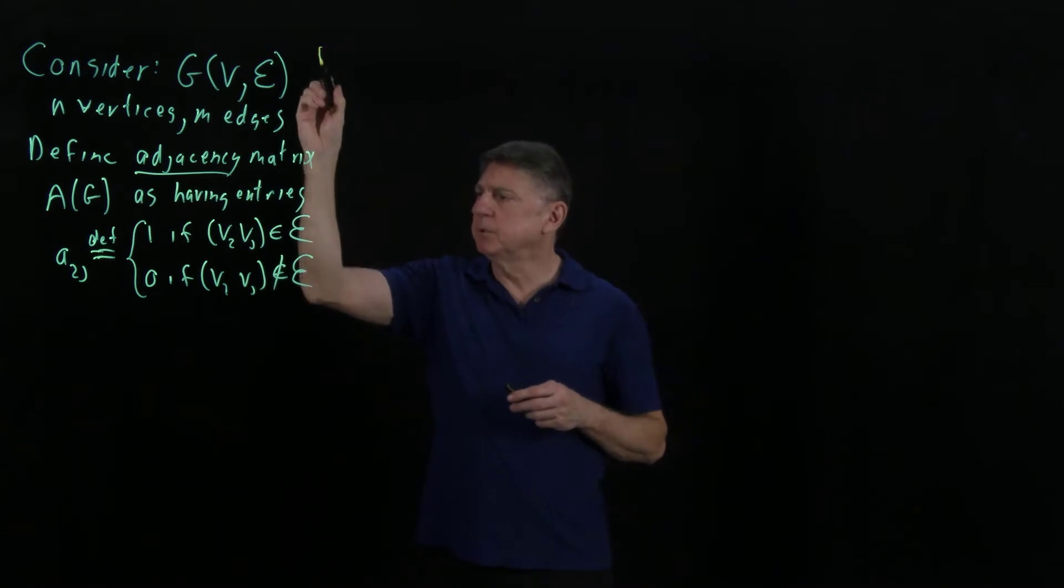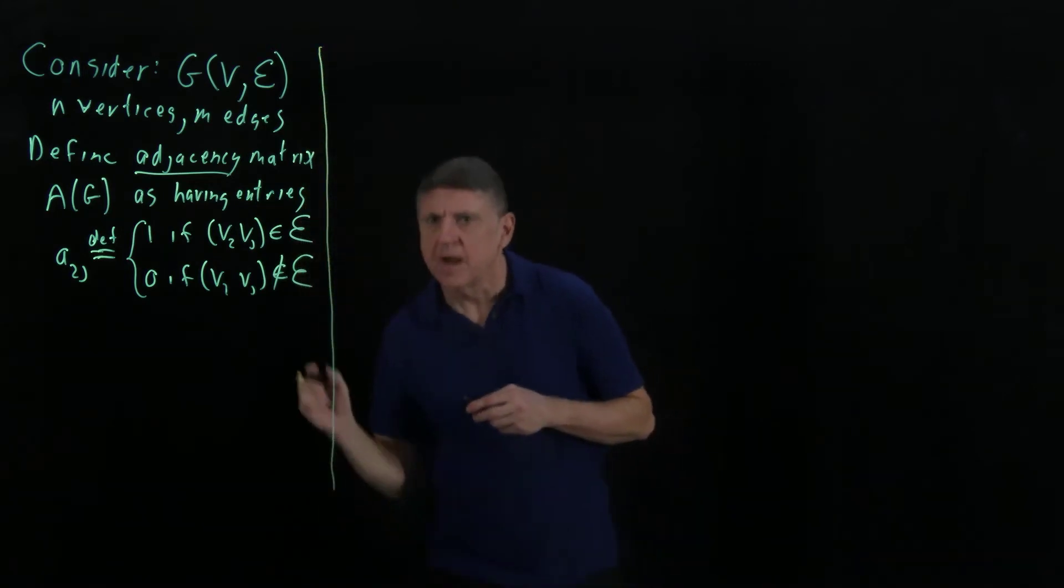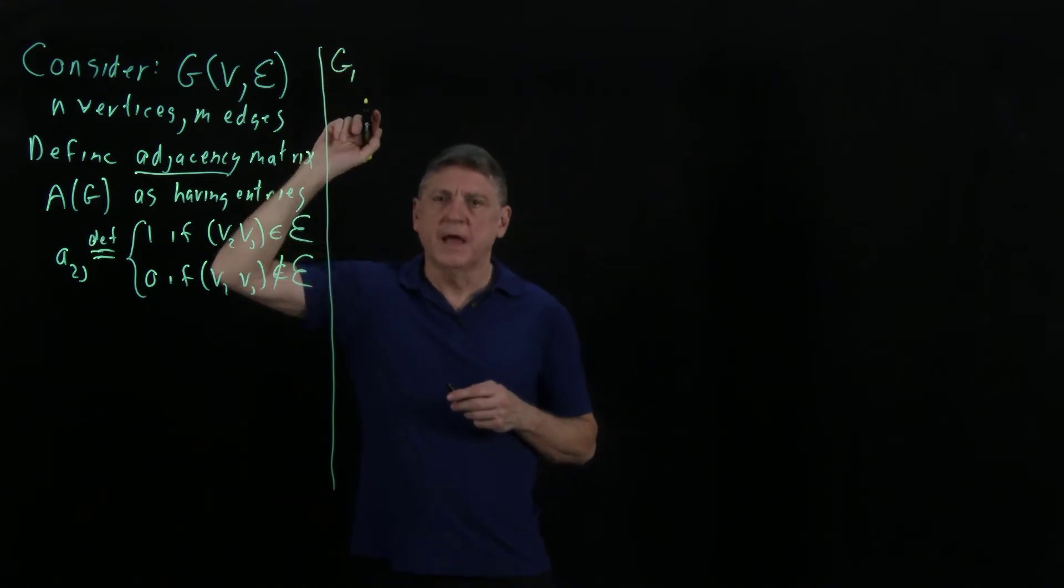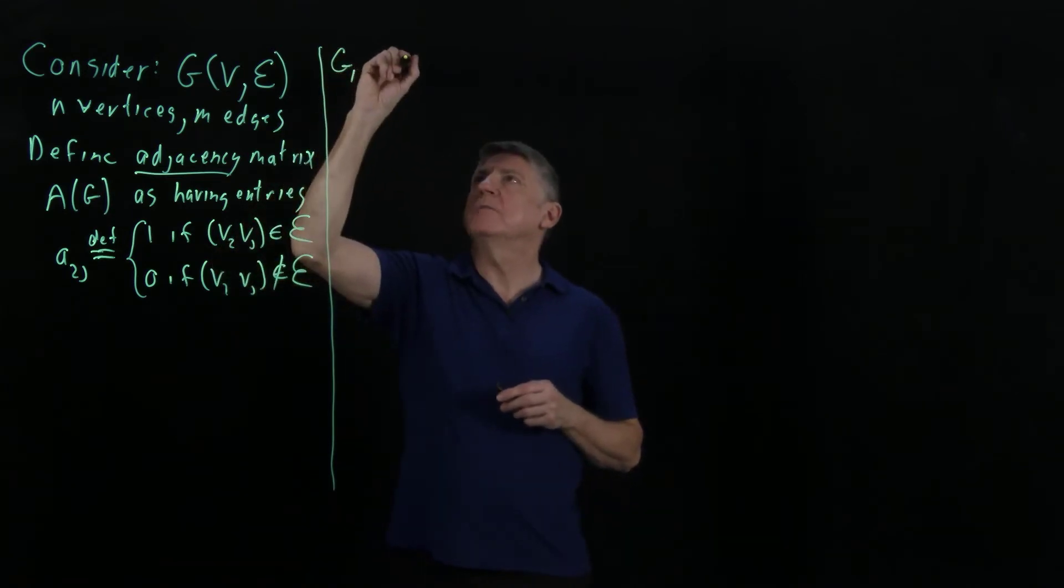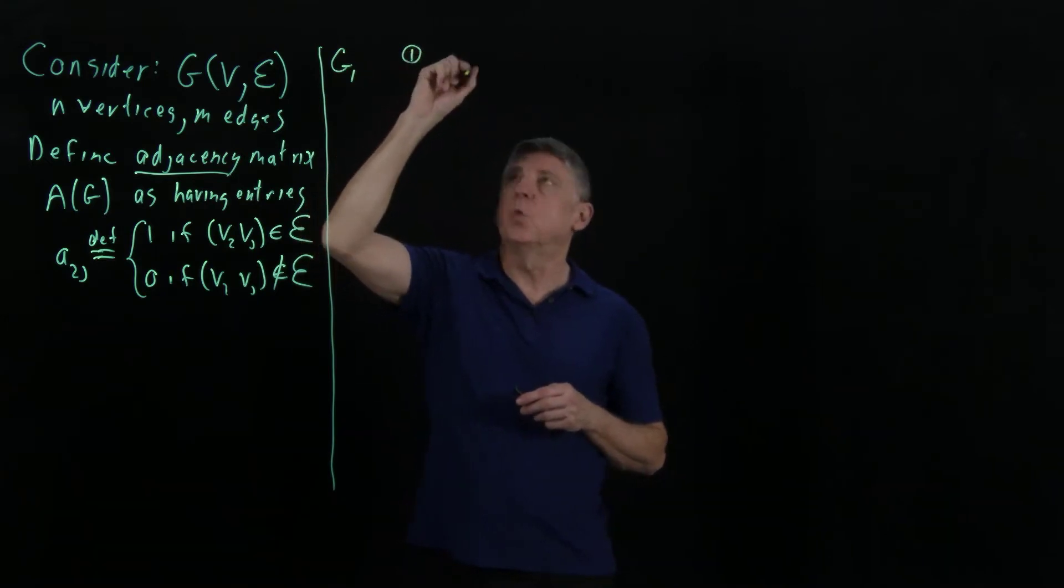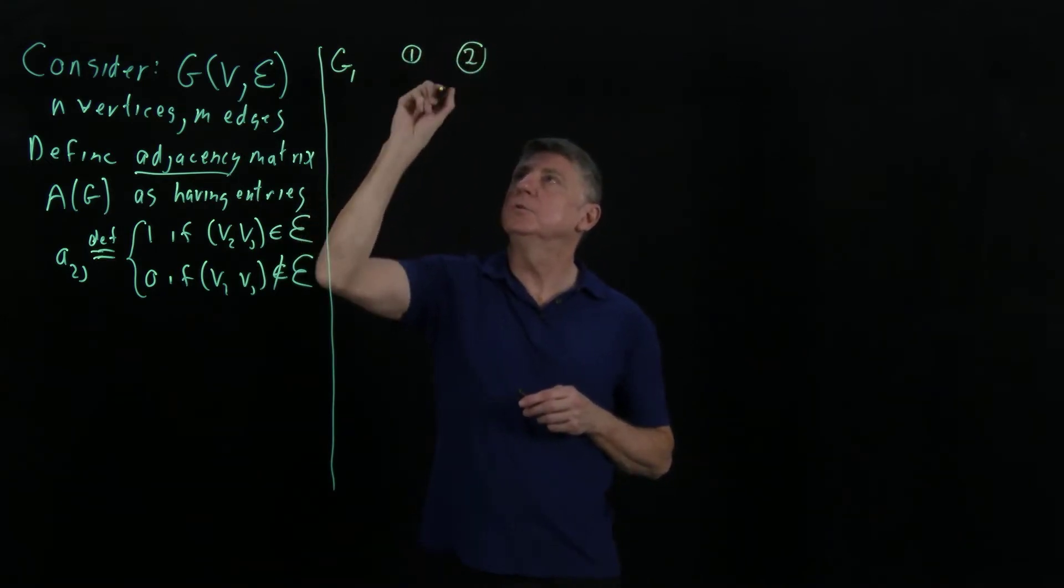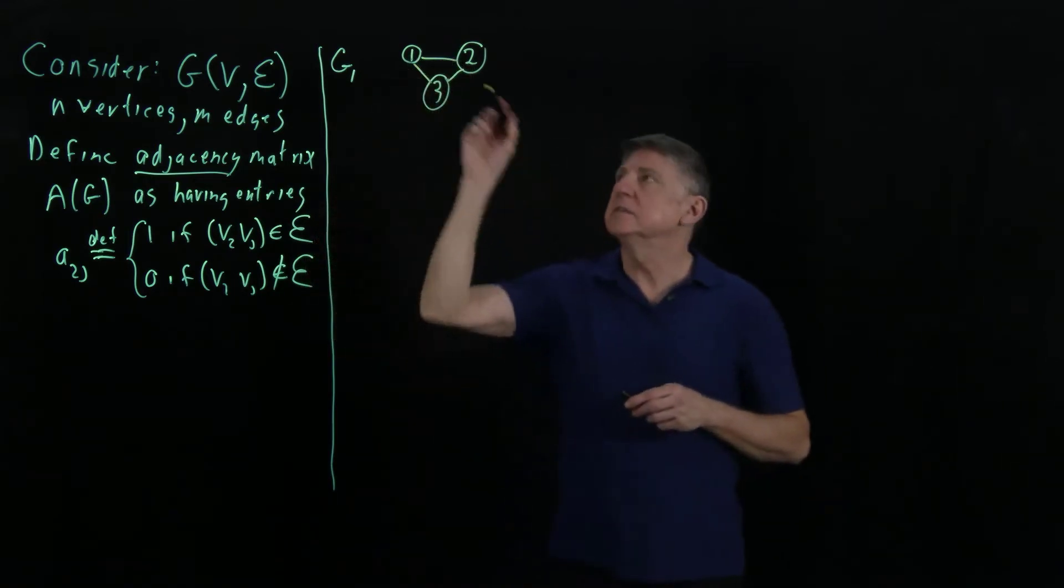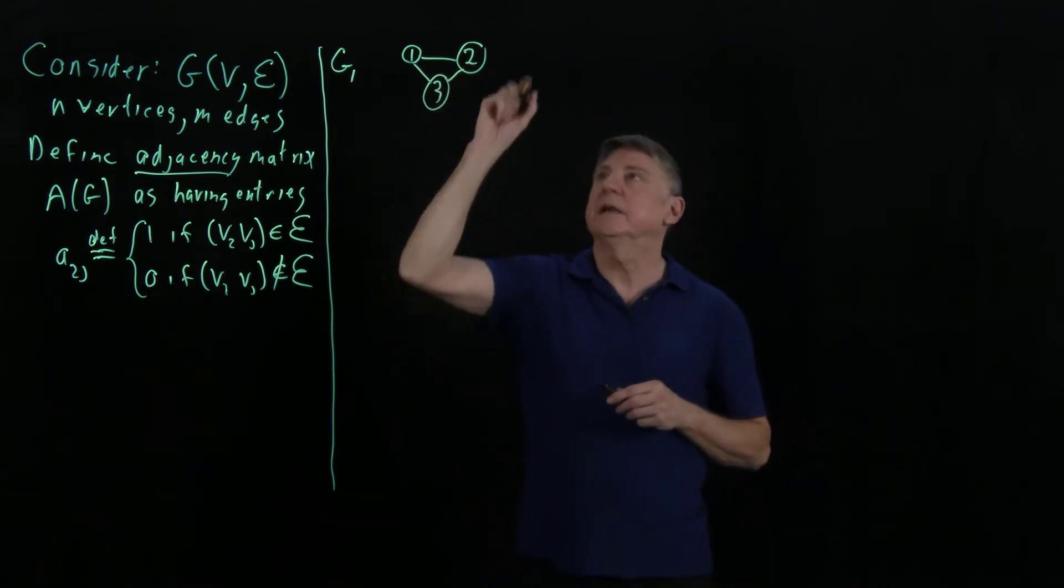So let's take a simple example. And we'll refer to this as graph G1. And let's suppose that the graph looks like this. It's got vertices 1, 2, and 3.